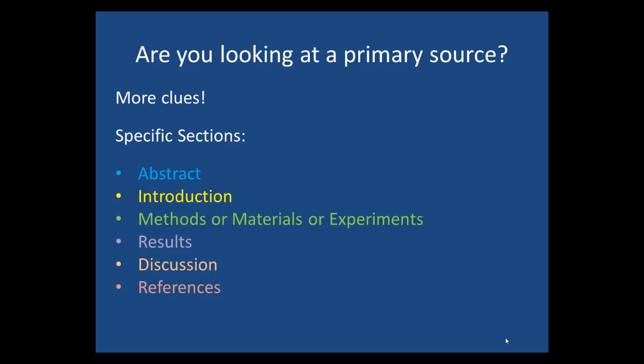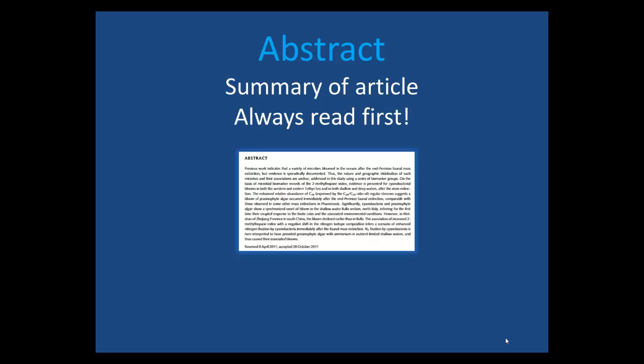Let's talk about what each of these sections covers. An abstract is a summary of the article that explains what the researchers did and what the major findings were. It's important to read this first to determine if the entire article is relevant to you.